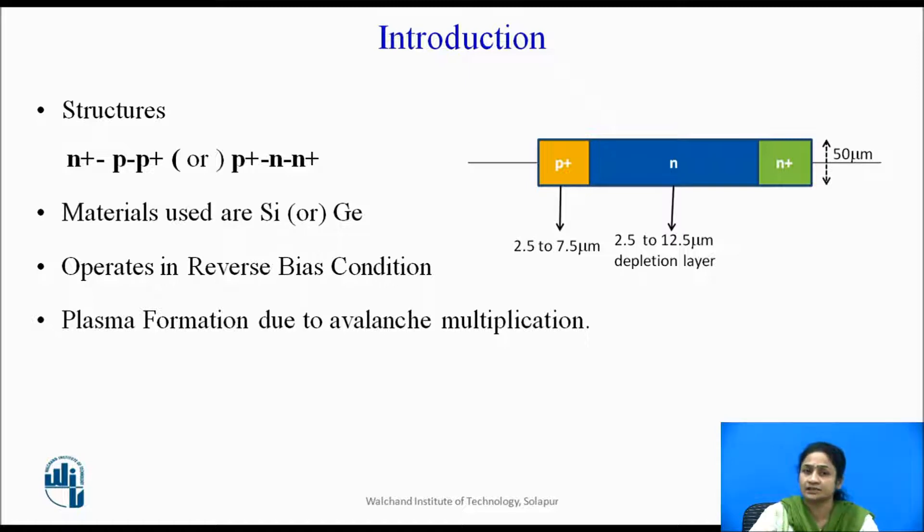This diode operates in the reverse bias condition and plasma formation takes place in this diode. The plasma formation is nothing but a formation due to the ions and the electrons.